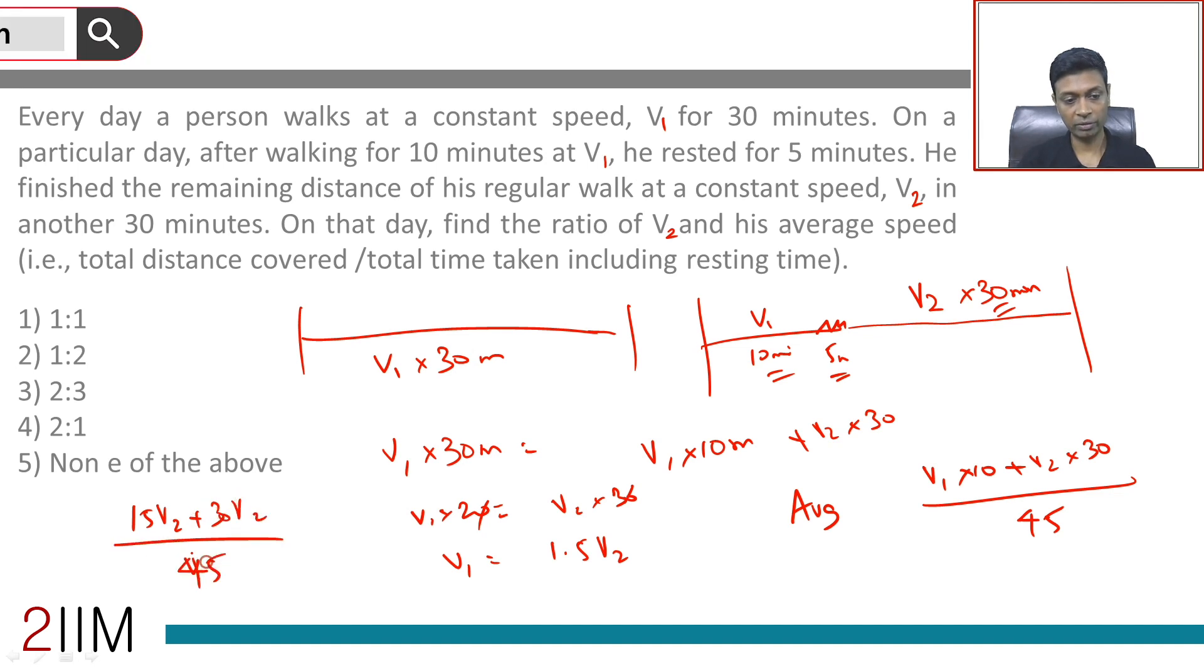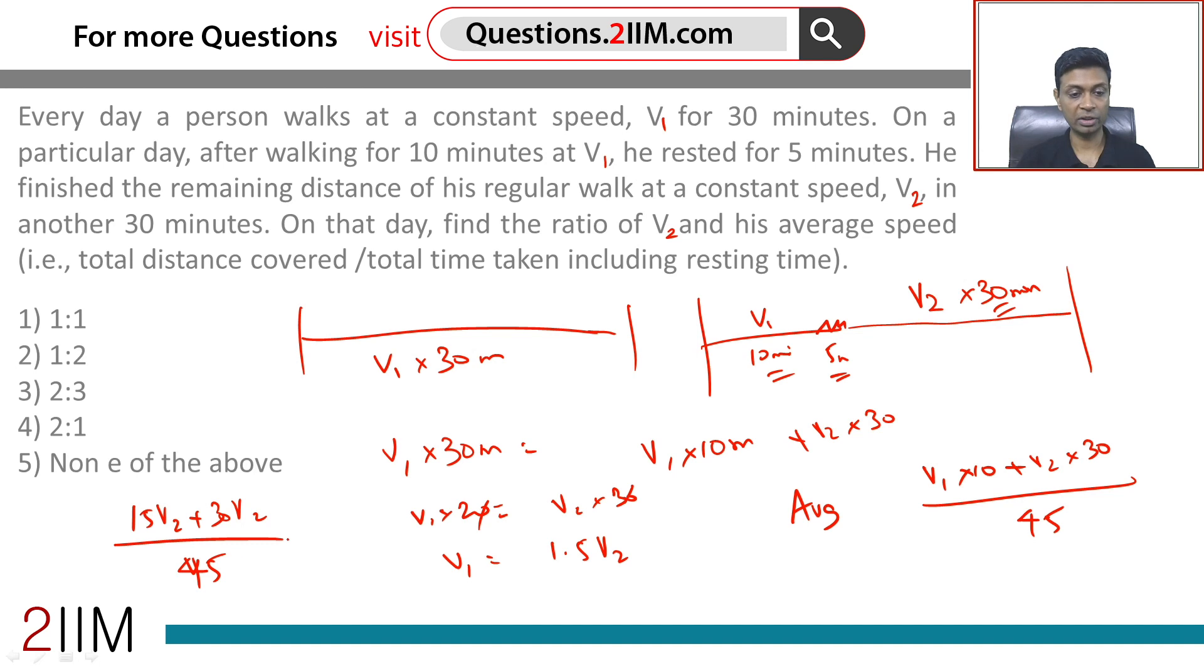Or 45 v2 by 45, this is v2. The average speed in the second leg is v2. The ratio of v2 to the average speed on that day is 1 to 1.